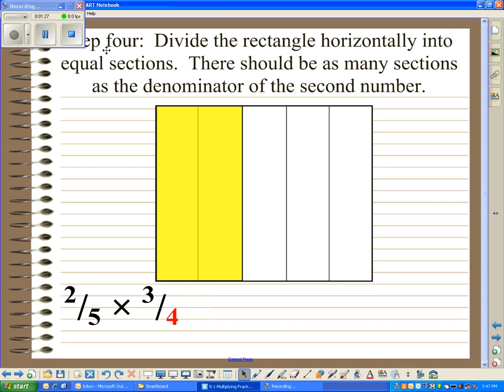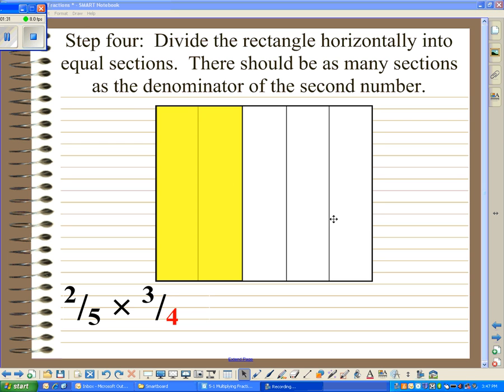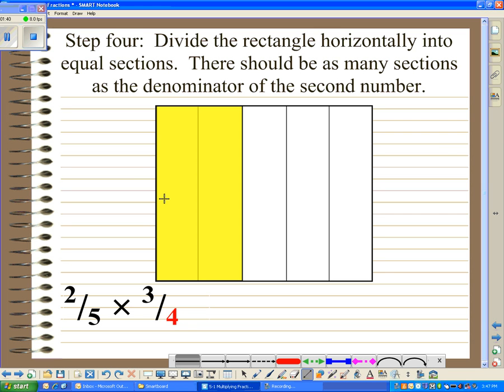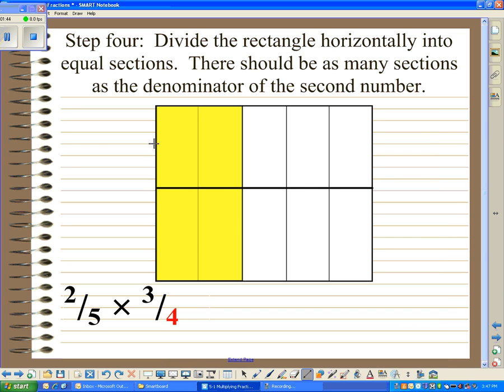Step four. You can see where it's step four at this point. Step four is to divide the rectangle horizontally into equal sections. There should be as many sections as the denominator of the second number. The second number is 3/4. The denominator is four. So I'm going to divide horizontally into four sections. Split it in half and then split each section of each half in half. That'll give me fourths. We're pretty close to fourths.